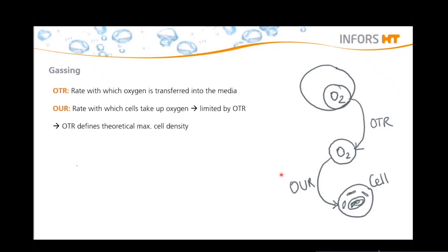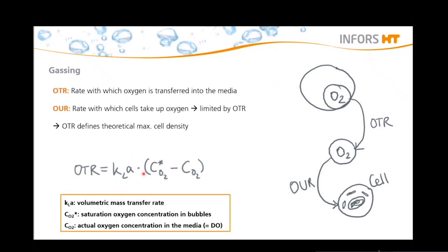Actually, that kind of makes sense to me. The OTR is also described by the following formula. The KLA is the volumetric mass transfer rate, which is multiplied by the difference between the saturation oxygen concentration and the dissolved oxygen concentration. To ensure adequate oxygen availability, the agitation speed, gas flow rate, and gas composition need to be controlled in your bioreactor. By considering these factors, Laura, nothing stands between a successful process transfer into the bioreactor.